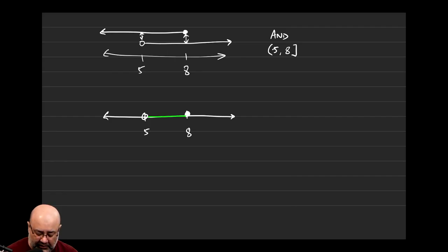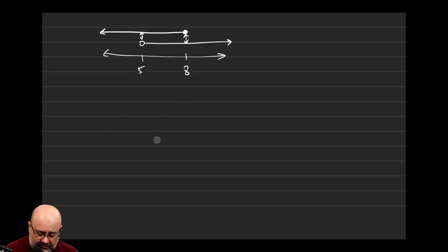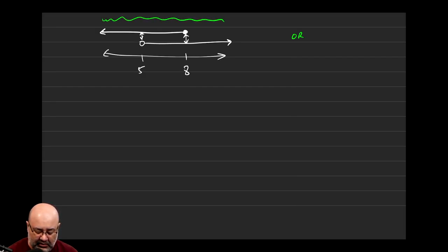This is saying all the numbers in the middle are solutions, the number 8 is a solution, but the number 5 is not a solution. Now, had this been an OR problem — for OR, you're asking where am I covered. So if there's rain falling all over the place, you're covered everywhere, and the solution would be negative infinity to infinity.